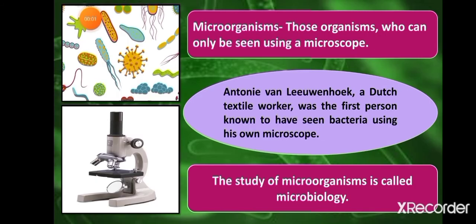A large number of tiny organisms are present in air, water, and soil; some are present on the surface of or inside the bodies of other organisms. These tiny organisms are so small that we cannot see them with the unaided eye — we can see them only with the help of a microscope. Those tiny organisms that can be seen only by using a microscope are called microorganisms or microbes.